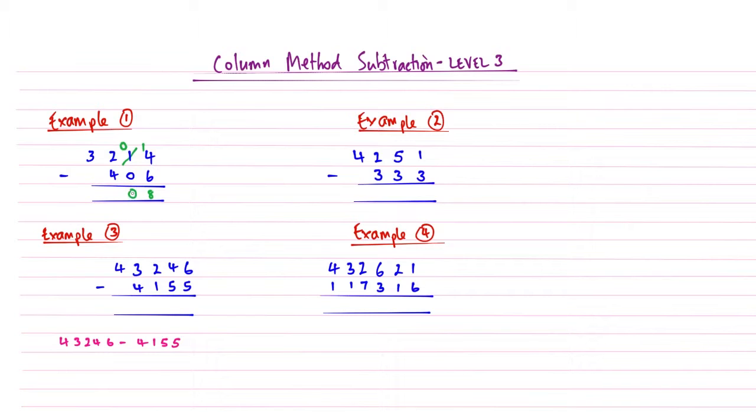Tens column: 0 subtract nothing just gives us 0. 2 subtract 4, well again this is smaller so we're going to borrow again from this one. So we're going to reduce that to a 2 and then move the 1 that we've taken from the 3 next to the 2. Now we're going to read that as a 12. 12 subtract 4, well again 6 to 10 and then 10 to 12 is 2. So 6 add 2 gives me 8. And then finally the thousands column, 2 subtract nothing gives me 2. And so the answer to example number 1 is 2808. And so there's our first example of where we have to borrow twice in that calculation.